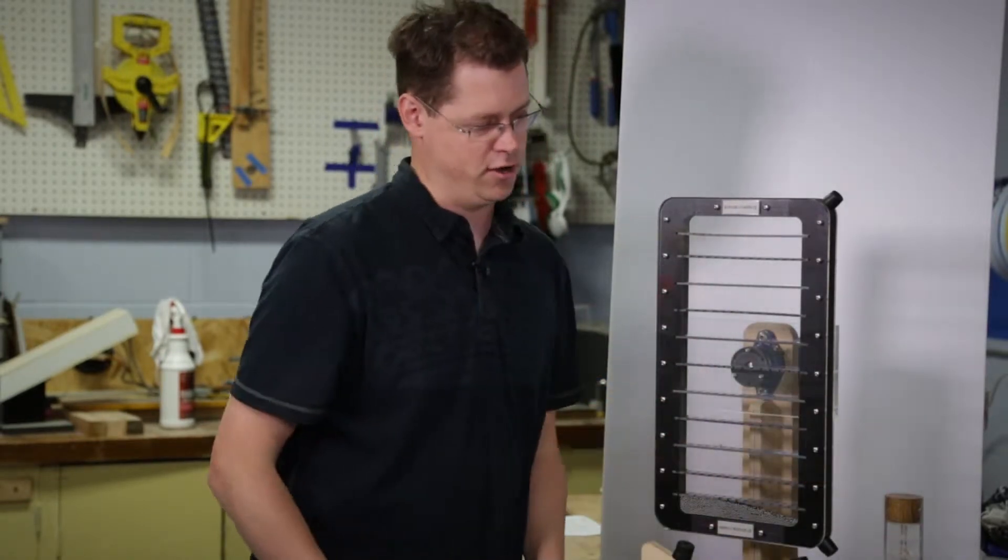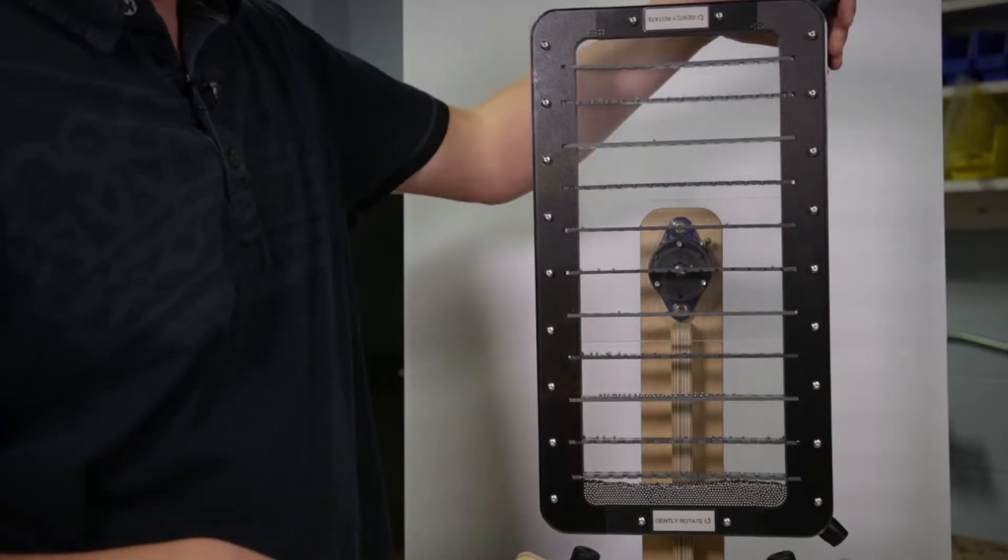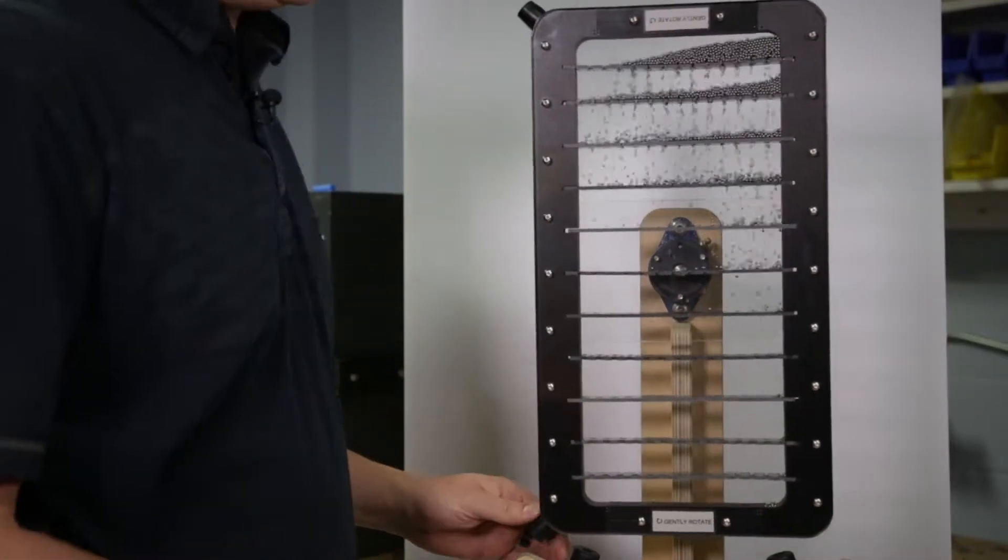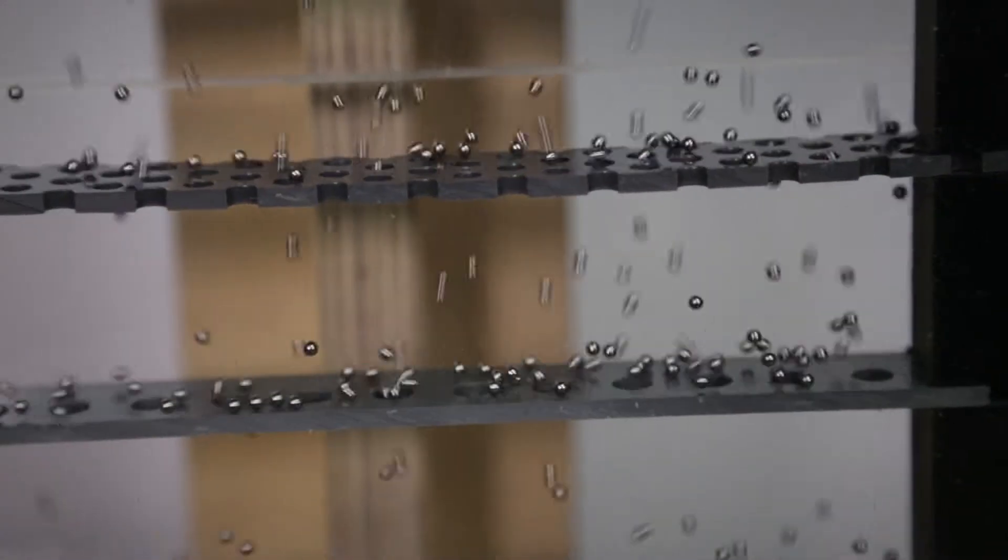After playing with that one a little bit, I arrived at this. And this is what we call the rain panel. When you flip it, the balls cascade through.